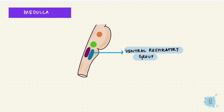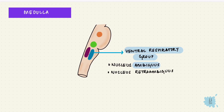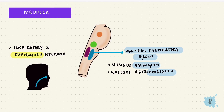The neurons of the ventral respiratory group are in the nucleus ambiguus and the nucleus retroambiguus. It has both inspiratory and expiratory neurons but mainly regulates expiration. Since quiet expiration is just from passive elastic recoil of the lungs, it stays inactive. But when extra expiratory drive is needed, that is when the ventral group becomes active.